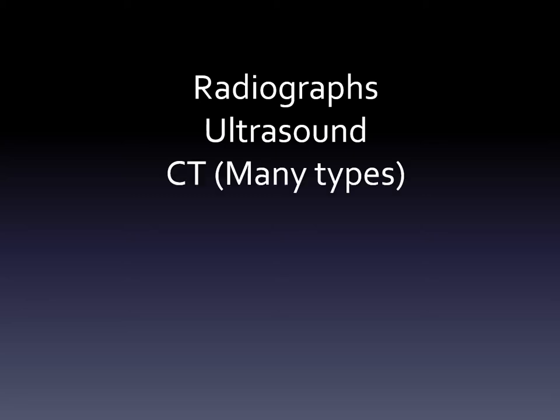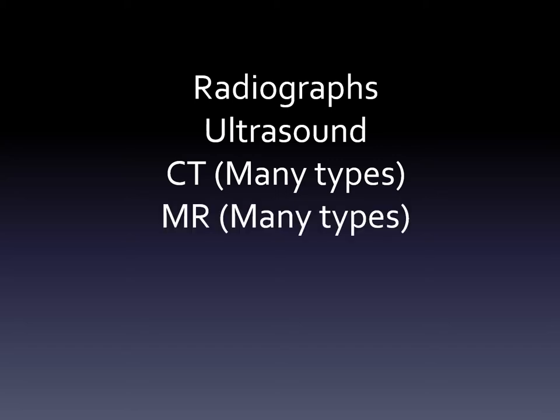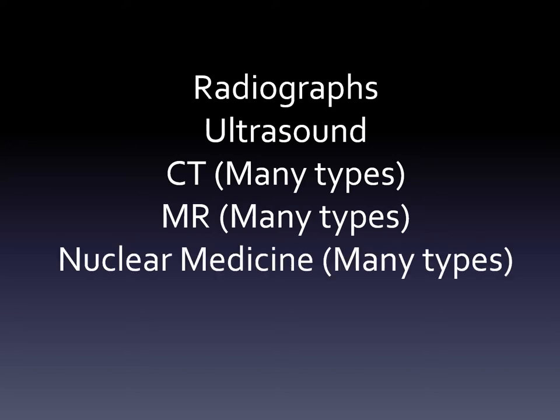In limited cases, you can do ultrasound involving the thorax. A common test is chest CT, but there are actually many different types of chest CTs to choose from. We discussed a little bit about the role of MRI in evaluating the chest, and again there are many types. There are also tests in nuclear medicine. These are not included in our modules and are not as commonly ordered, but sometimes it is the best test for a certain situation.